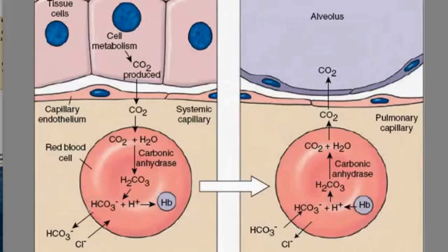As carbon dioxide dissolved in the plasma continues to diffuse into the alveoli, there is a decrease in the concentration of carbon dioxide in the blood. So carbon dioxide that is joined with hemoglobin in the form of carbaminohemoglobin dissociates itself, and this dissociated carbon dioxide also continues to diffuse out of the RBC into the alveoli.